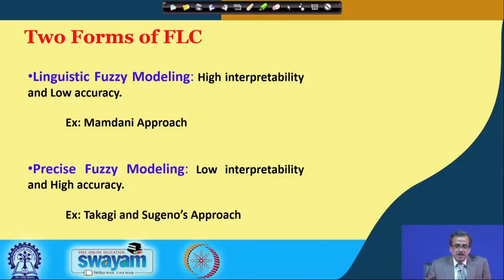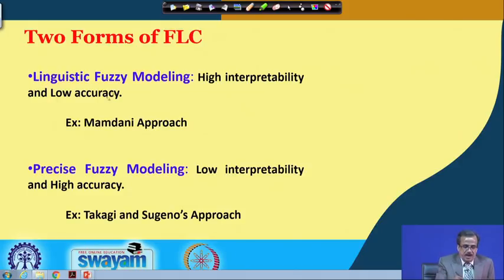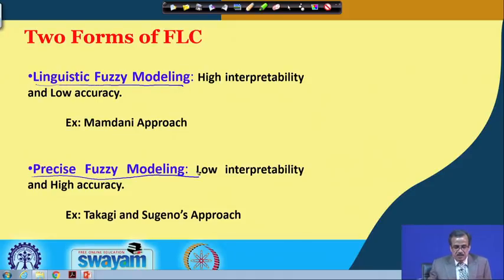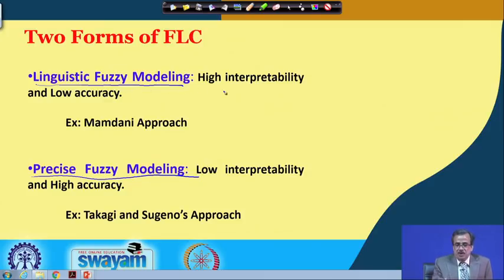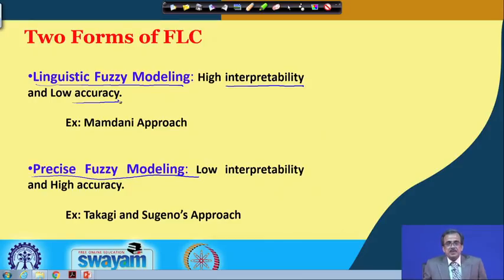This fuzzy reasoning tool or fuzzy logic controller has been divided into two groups: one is called linguistic fuzzy modeling and another is called precise fuzzy modeling. By linguistic fuzzy modeling, we mean those fuzzy models where we have high interpretability but low accuracy. Let us understand what we mean by the interpretability of a rule.